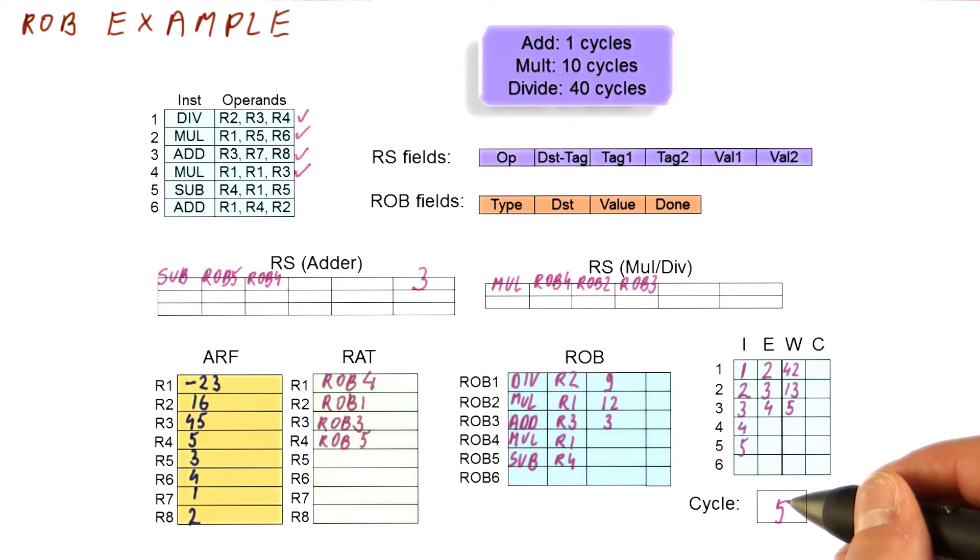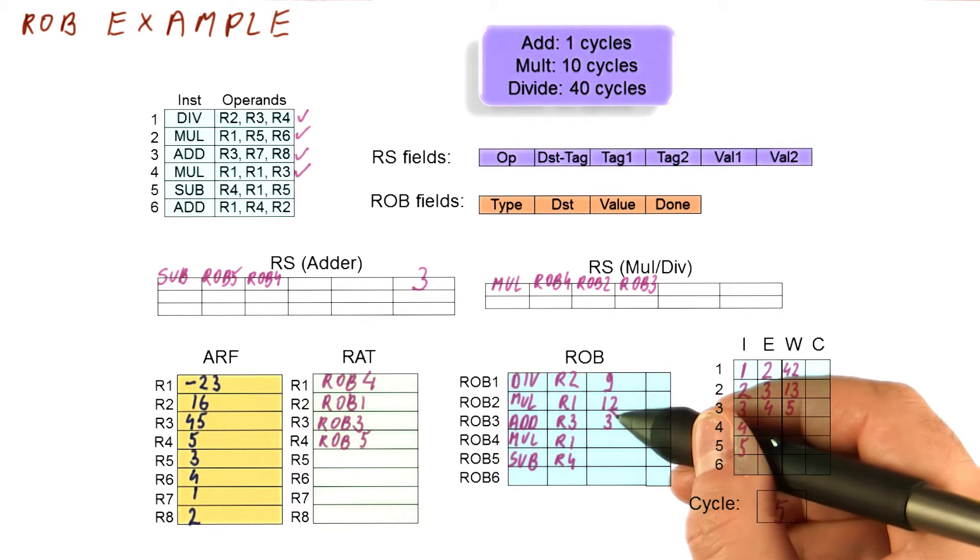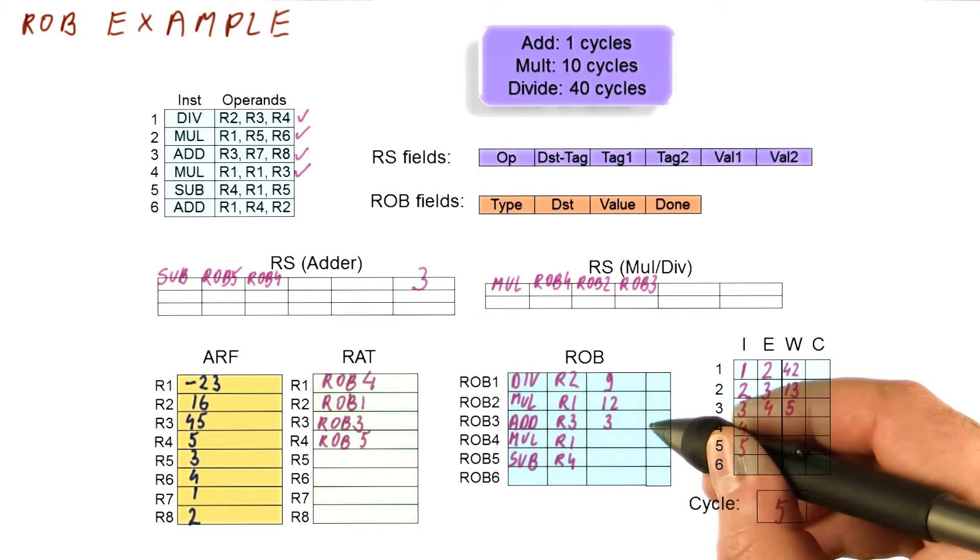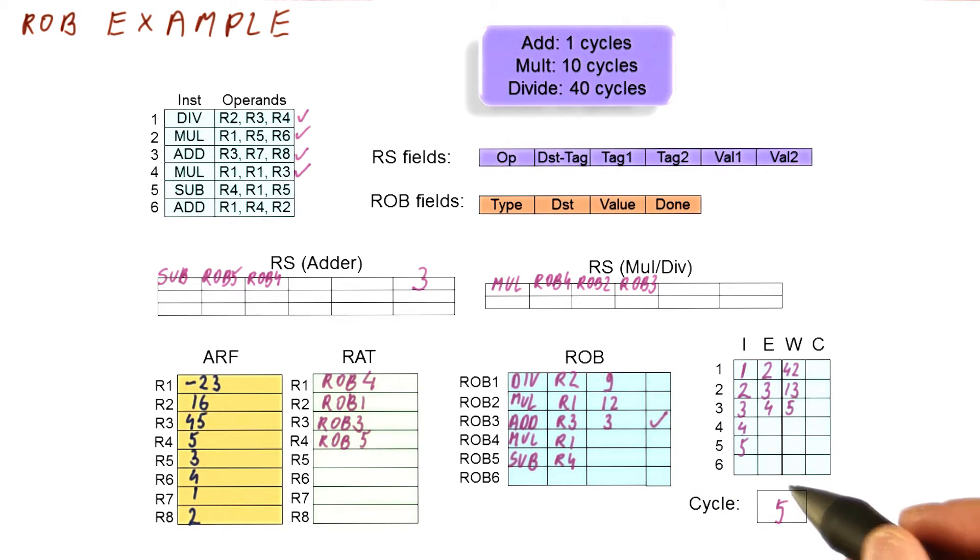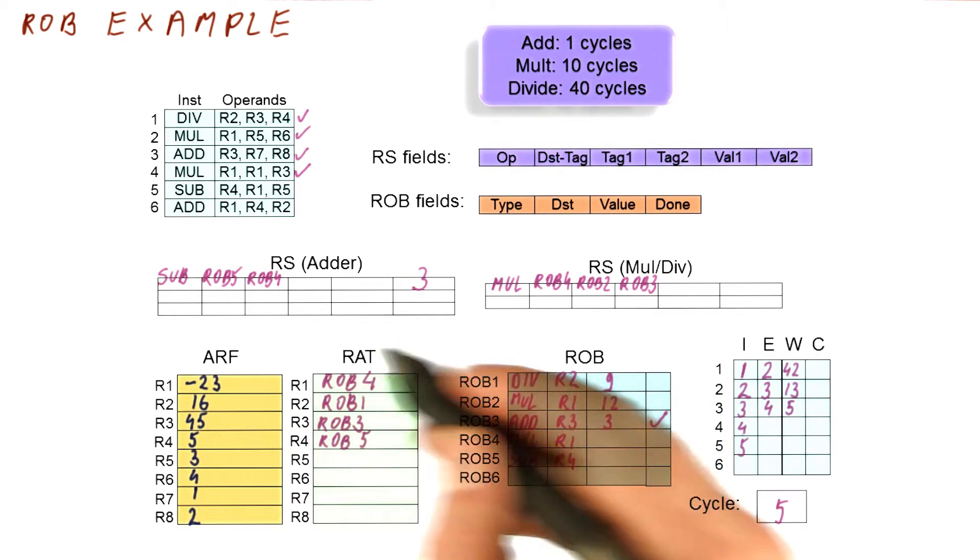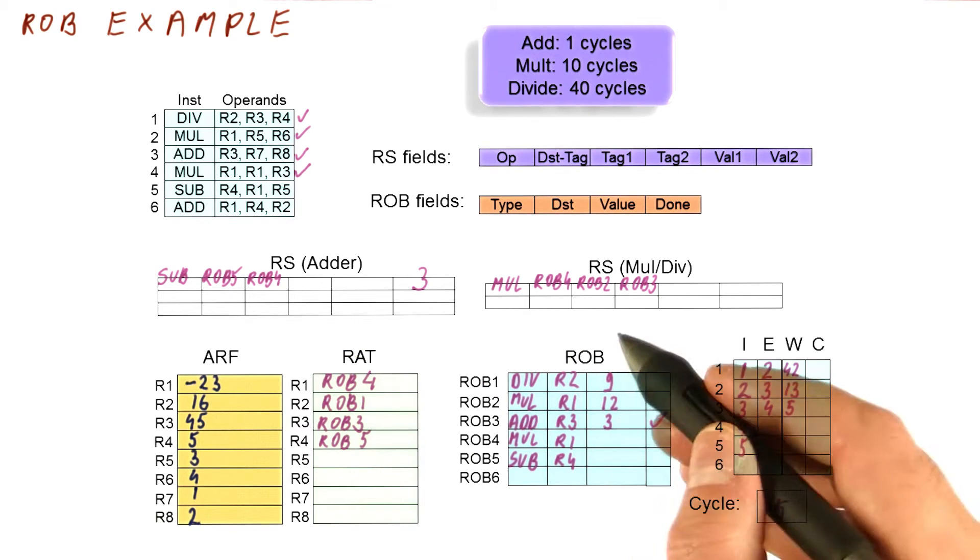Another thing that happens in cycle five is that we need to take care of the writing of the result for the ROB3 instruction. So what happens is this instruction writes the result of 3 with a tag of ROB3. Now this 3 is written here and the instruction is marked as done. Also, the value of 3 is broadcast under the name of ROB3 so that the reservation stations can capture it.